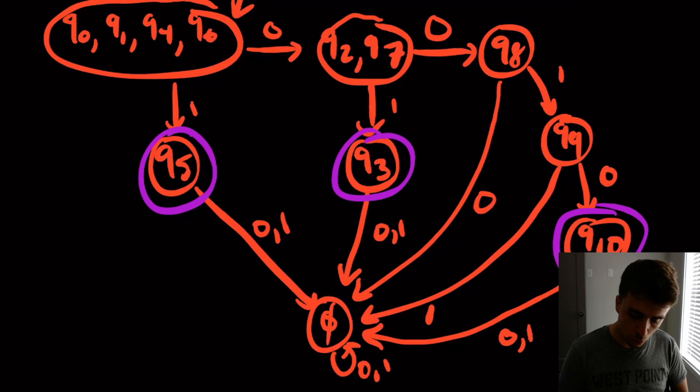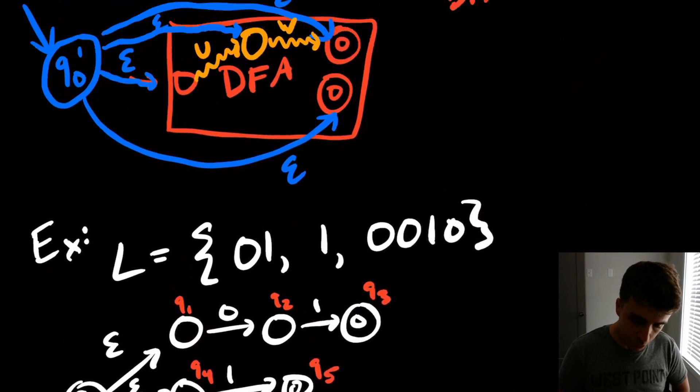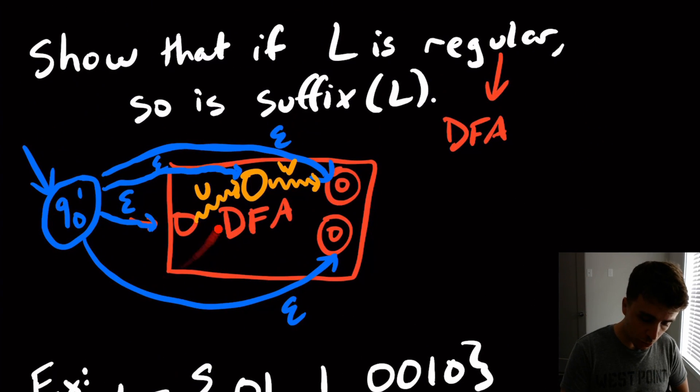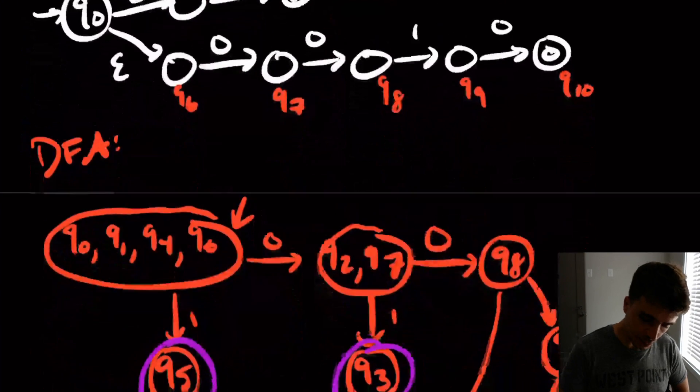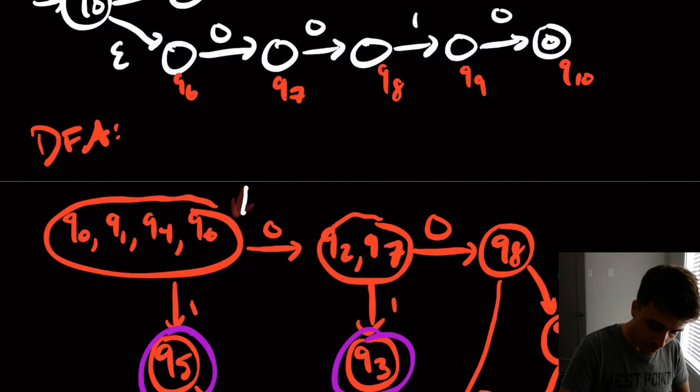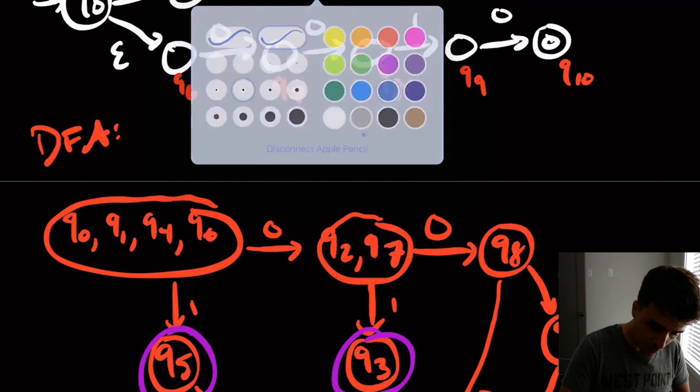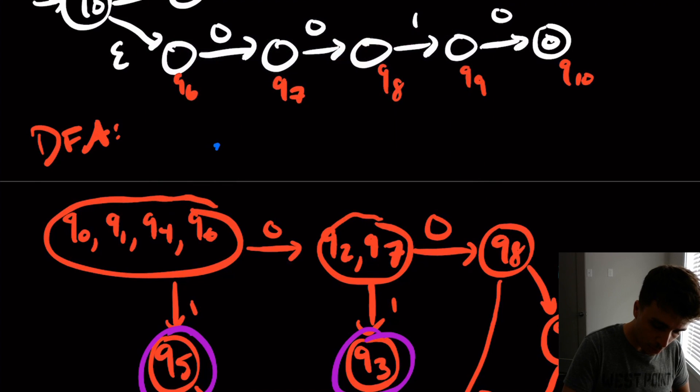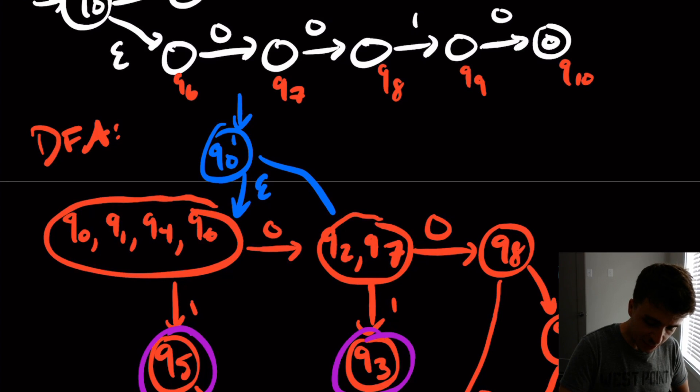Okay, so now what we need to do is to do this construction on the suffixes. So just like before, I'm going to make this blue state right here, light blue, q0 prime. And it has an epsilon transition to every state.